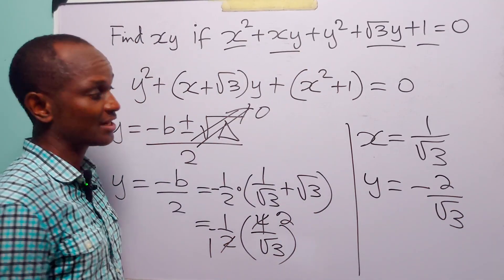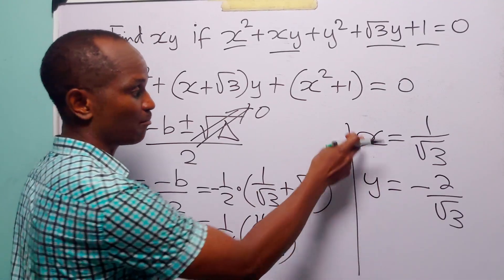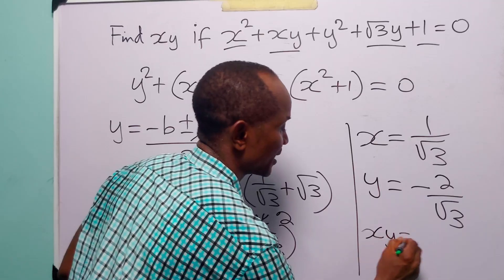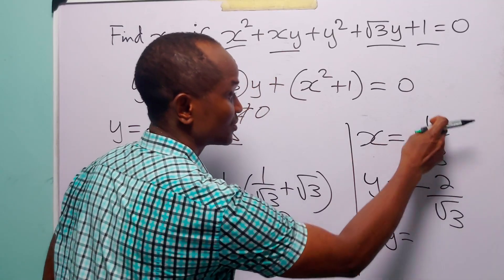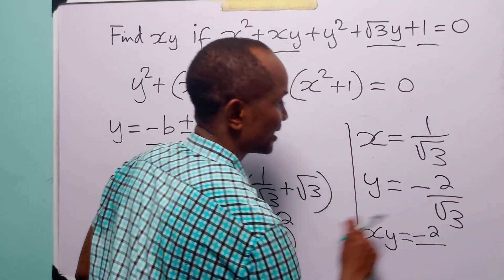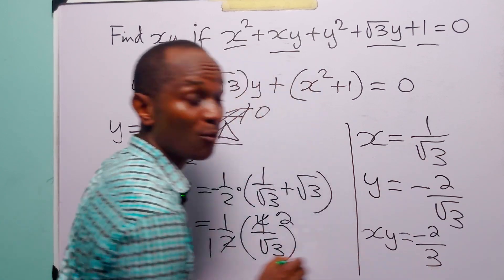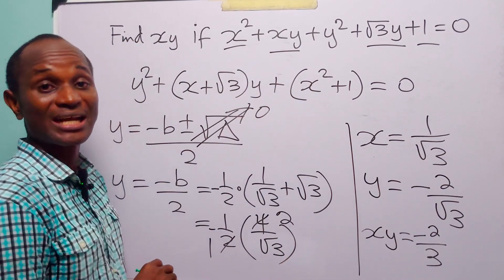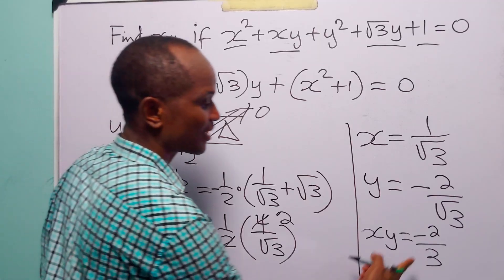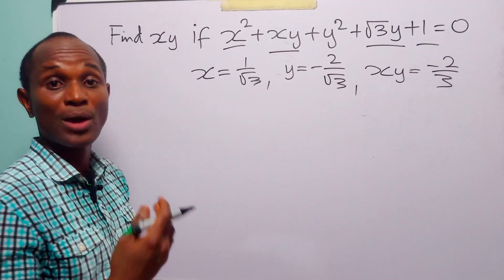Now we can find the value of xy by multiplying these two values. We have xy equals 1 over root 3 times minus 2 over root 3, which is minus 2 divided by root 3 times root 3, equal to 3. So the value of xy is equal to minus 2 over 3.